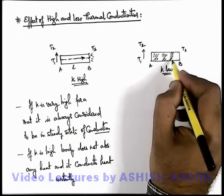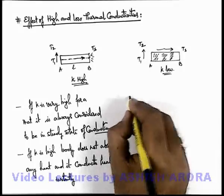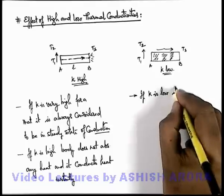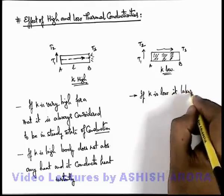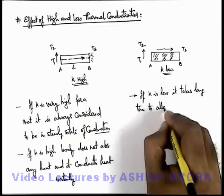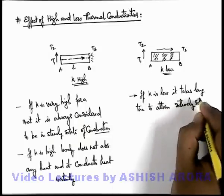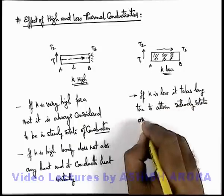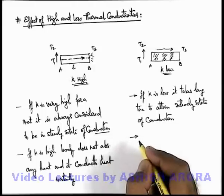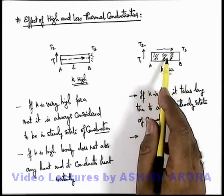So first the temperature of the initial sections will rise, then after conduction the temperature of the next section will rise, and then the next, and so on — conduction of heat takes place progressively. So we can say if k is low, it takes a long time to attain steady state of conduction. Another point is that if the value of k is low, the maximum amount of heat will be absorbed by the body.